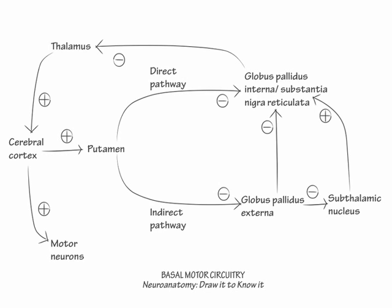Lastly, we need to account for the substantia nigra compacta, because Parkinson's disease results from a loss of dopaminergic cells within the substantia nigra compacta. The substantia nigra compacta serves to energize movement. It excites the direct pathway and inhibits the indirect pathway through different dopaminergic receptors in the putamen. Indicate the dopamine 1 and 5 receptors, which are excitatory — show that substantia nigra compacta activation of these receptors causes excitation of the direct pathway, and thus excitation of the excitatory loop. Then label the dopamine 2 through 4 receptors, which are inhibitory — show that substantia nigra compacta activation of these produces inhibition of the indirect pathway, and thus inhibition of the inhibitory loop. In short, the substantia nigra compacta acts on both pathways to generate the same ultimate effect: the promotion of movement.